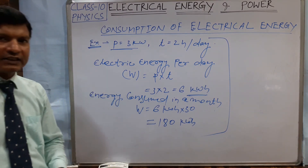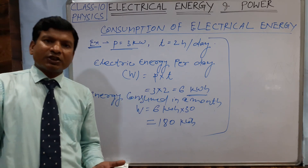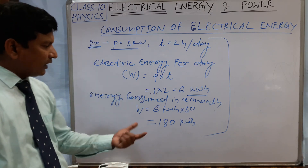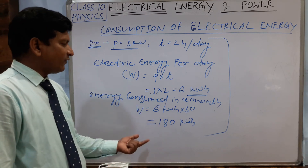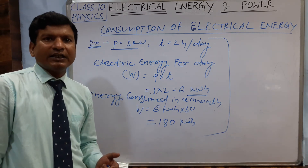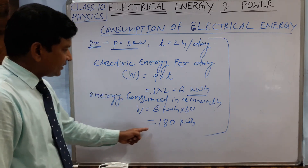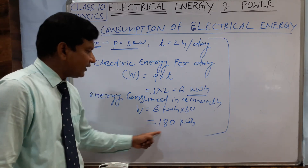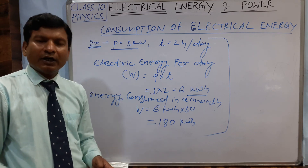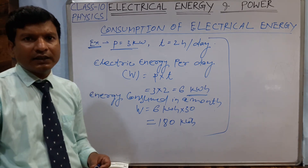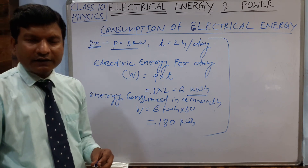After finding the energy consumed, we can also find the cost of electricity. Suppose the cost of electricity per unit is 5 rupees. Now you can calculate the cost of electricity for 180 kilowatt hour. I hope you understood. Thank you.